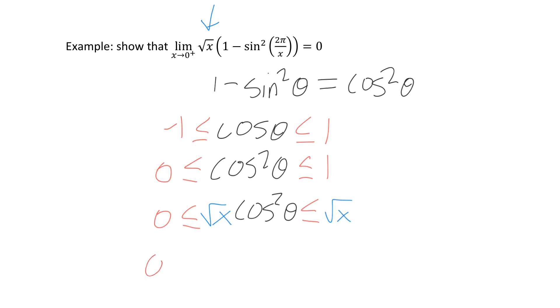And so I'm going to write the following: 0 is less than or equal to √x times, and now I can write 1 - sin²—and this holds for any theta—so I can put 2π/x, which will be less than or equal to √x.